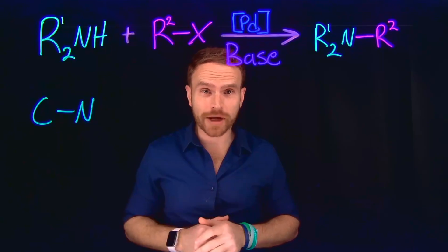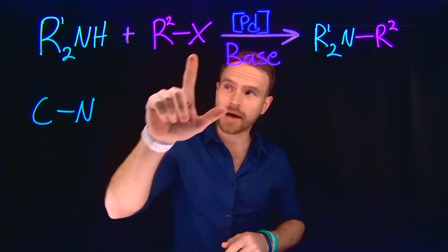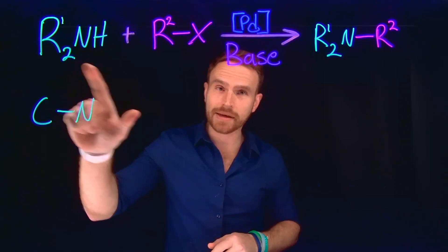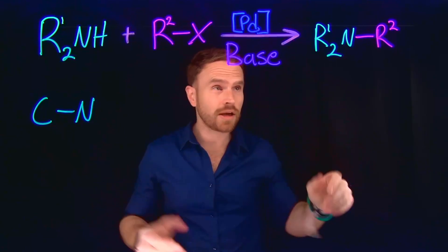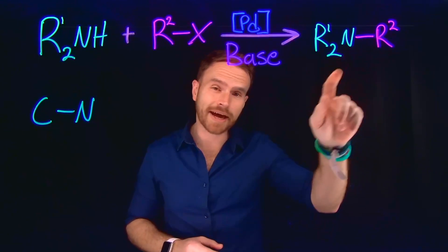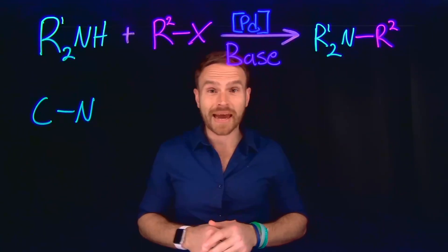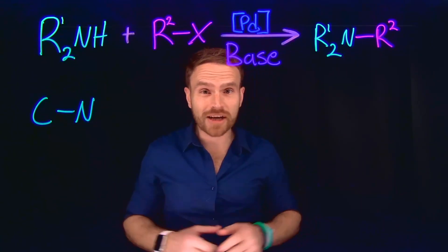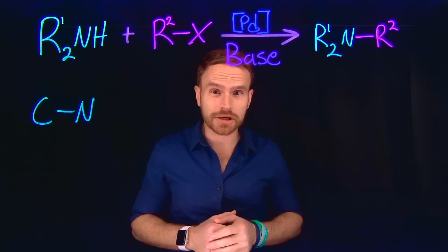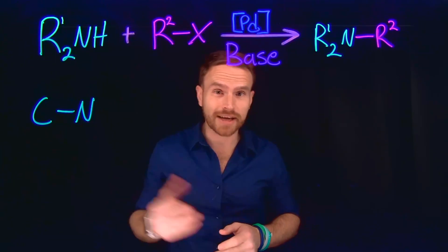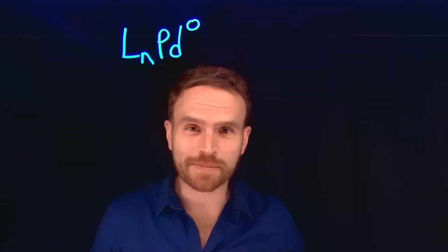The Buchwald-Hartwig amination couples an aryl halide with an amine using a palladium catalyst and a base. The result is a new carbon-nitrogen bond forming our arylamine. This reaction provides a more efficient and selective reaction compared to those like nucleophilic aromatic substitutions.